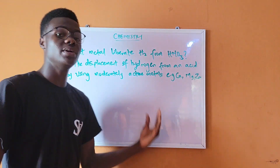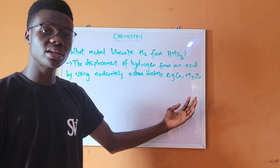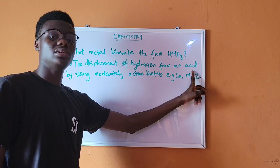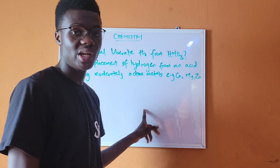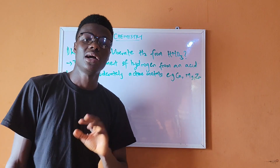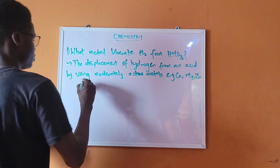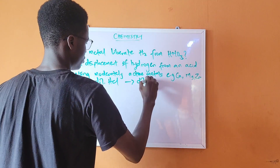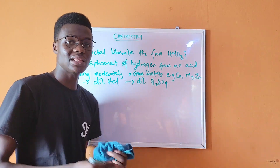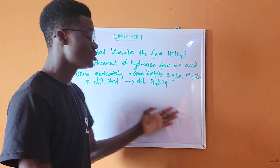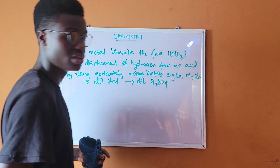The displacement of hydrogen from an acid uses moderately active metals such as calcium, magnesium, and zinc. The most common acids used in this reaction are dilute HCl and dilute H₂SO₄. These are the two acids commonly used, and this is the reaction equation.